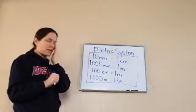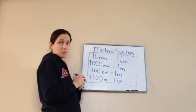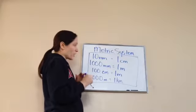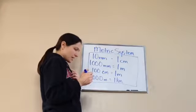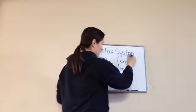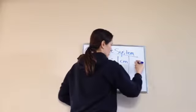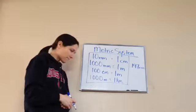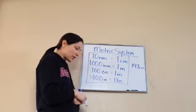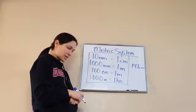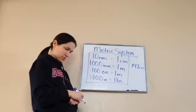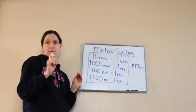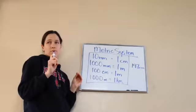Now listen to this problem — we're actually going to use the metric system. It says the star player on the basketball team is 197 centimeters tall. And then it asks: how many meters tall is the star player? So what two measurements did you hear? Centimeter and meter.